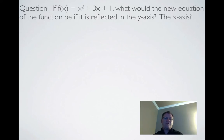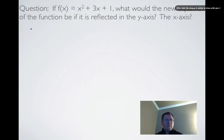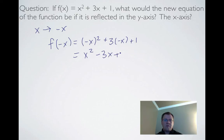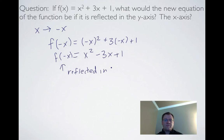A couple of examples. If f(x) = x² + 3x + 1, what is the new equation if it's reflected in the y-axis? We know that a reflection in the y-axis means all x-values switch signs, so instead of x we substitute in -x. In function notation we write that as f(-x), giving us x² - 3x + 1. So f(-x) means the function is reflected in the y-axis.